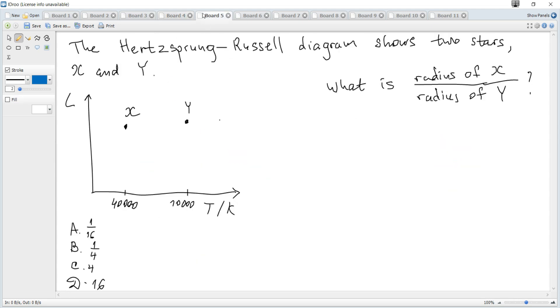The HR diagram shows two stars X and Y. What is the ratio of radius of X to radius of Y? We can see that luminosity of X equals luminosity of Y, and temperature of X is 40,000 and temperature of Y is 10,000.